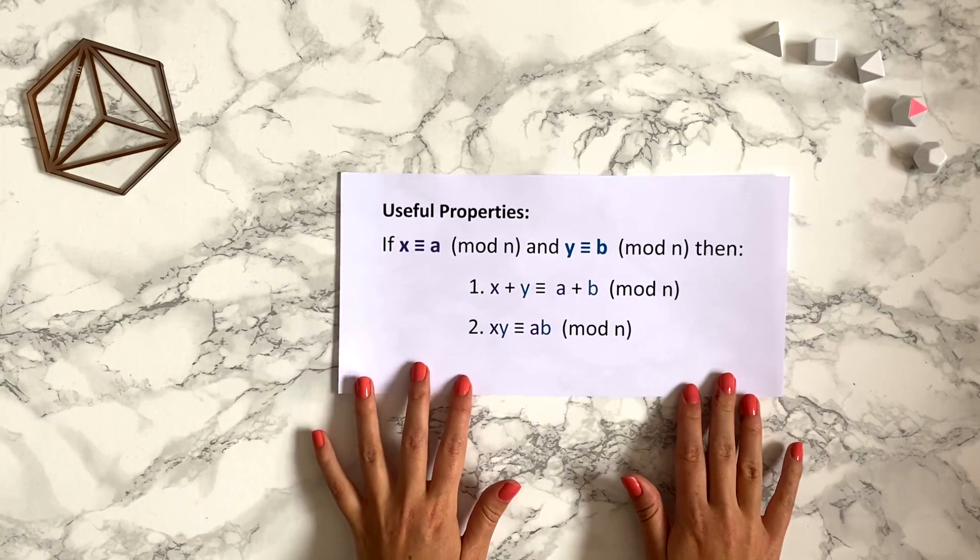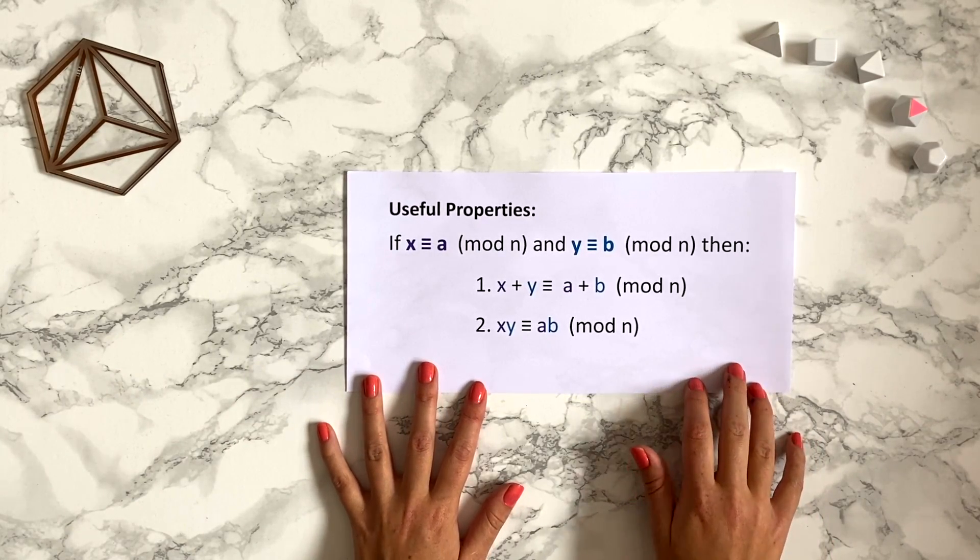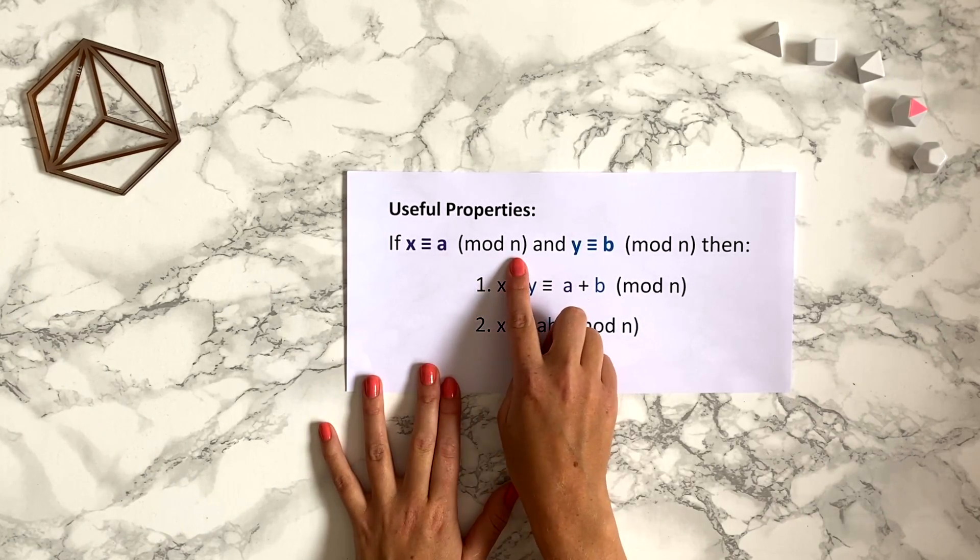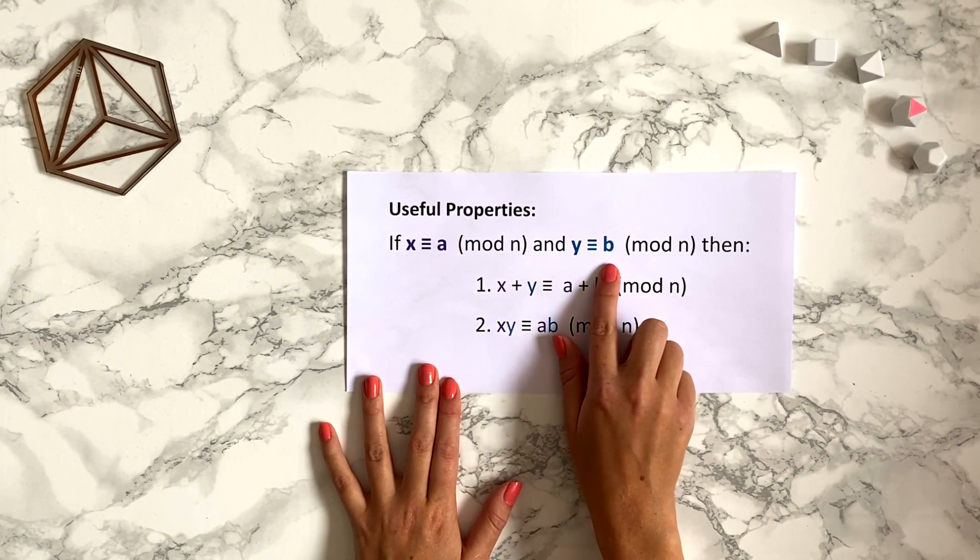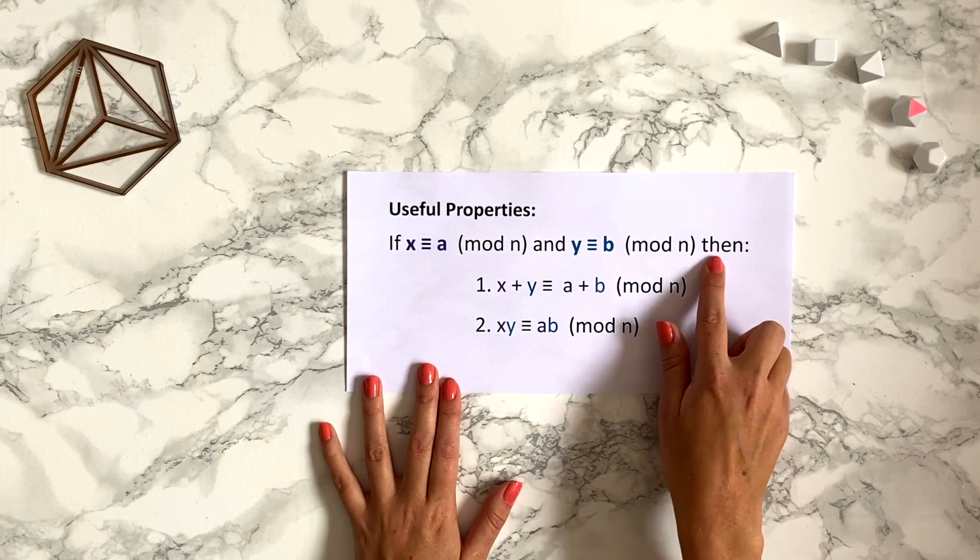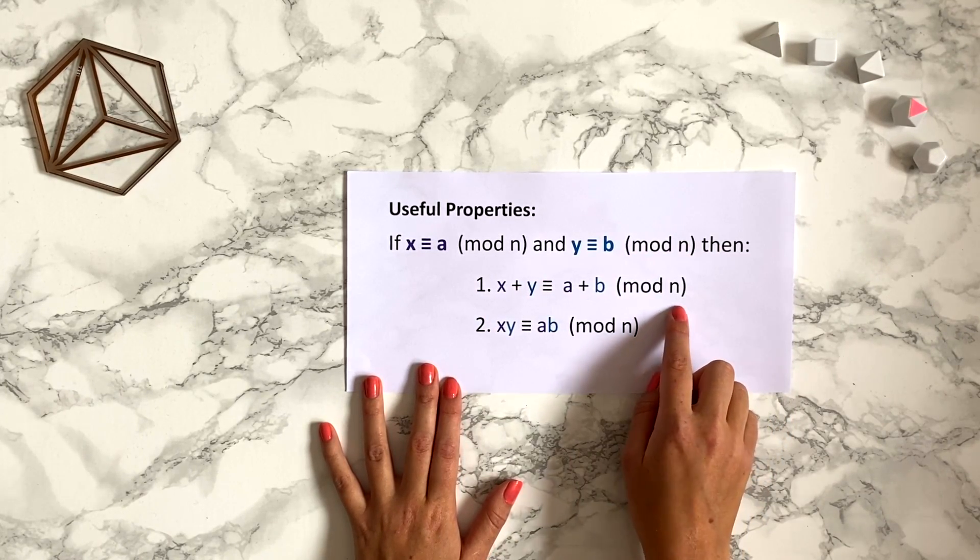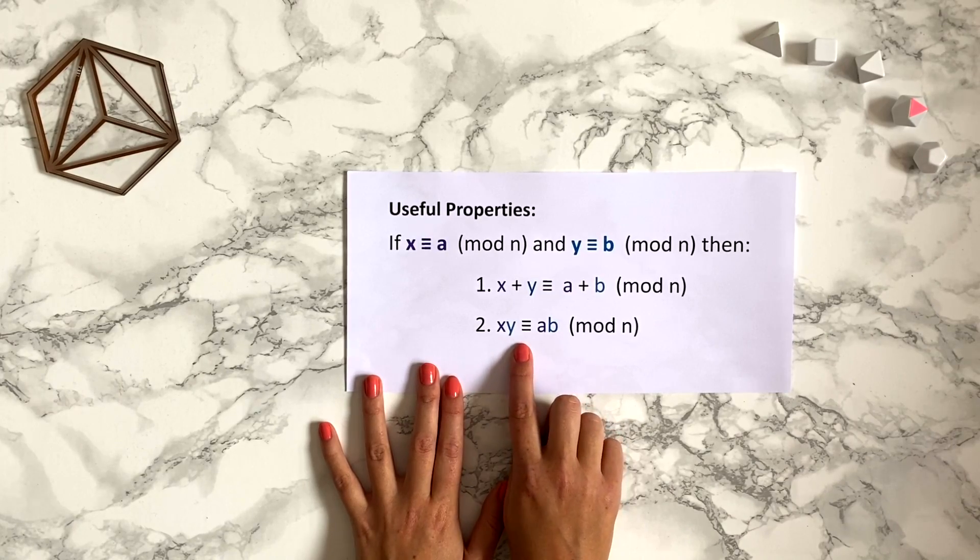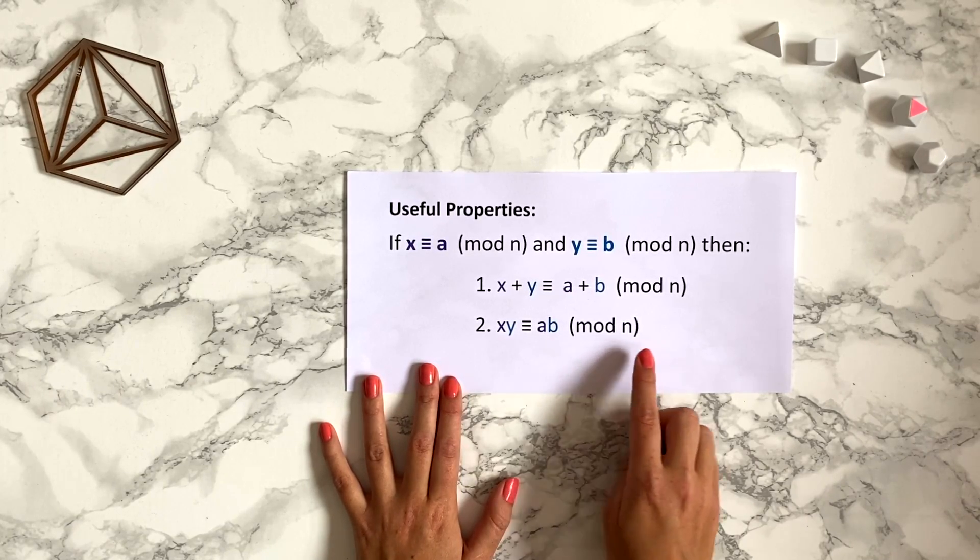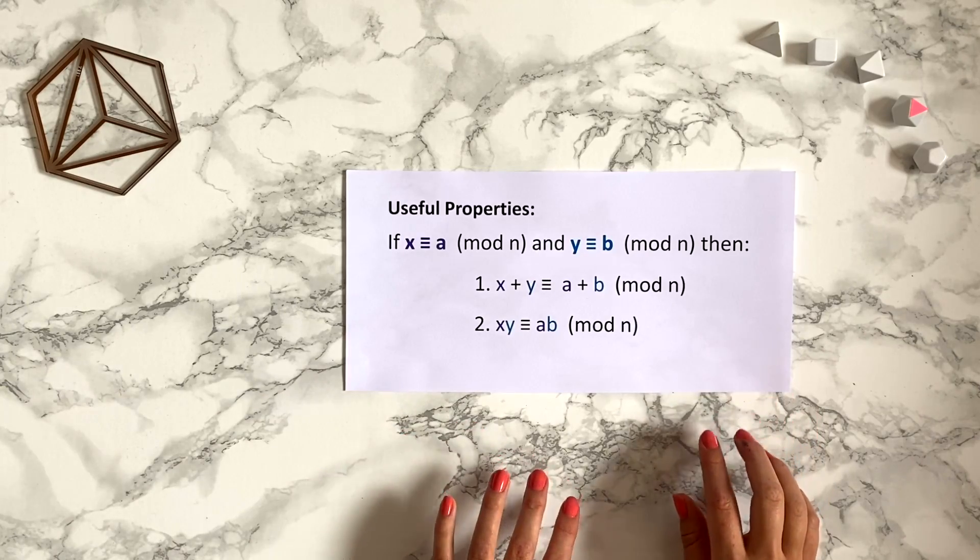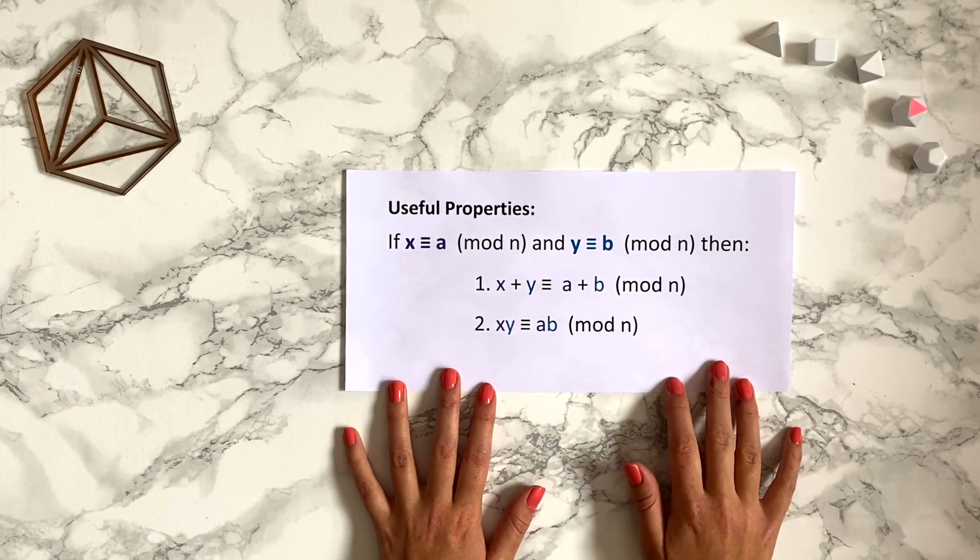There's a super useful theorem in modular arithmetic which says that if x is congruent to a modulo n and y is congruent to b modulo n, then x + y is congruent to a + b mod n, and x times y is congruent to a times b mod n. This might seem confusing to look at but it's not so bad. Let's see what this actually means in practice.